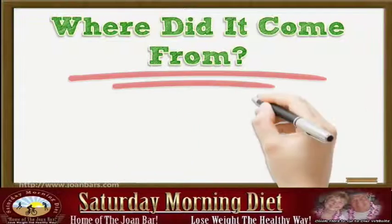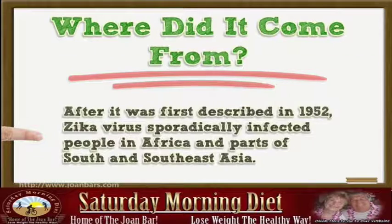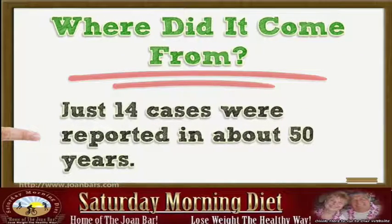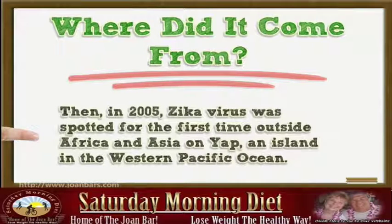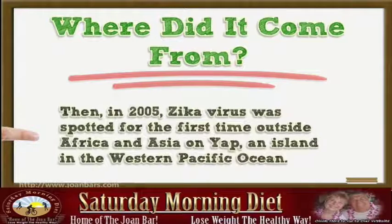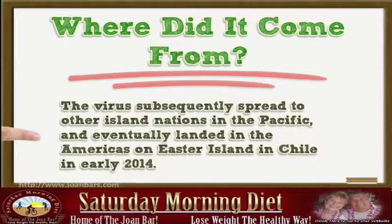Where did it come from? After it was first described in 1952, Zika virus sporadically infected people in Africa and parts of South and Southeast Asia. Just 14 cases were reported in about 50 years. Then, in 2005, Zika virus was spotted for the first time outside Africa and Asia on Yap, an island in the Western Pacific Ocean. The virus subsequently spread to other island nations in the Pacific, and eventually landed in the Americas on Easter Island in Chile in early 2014.